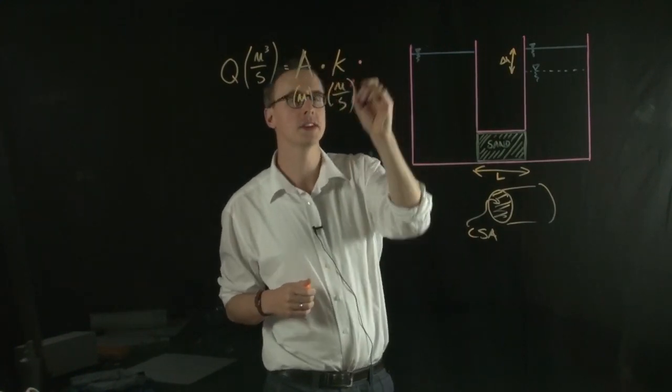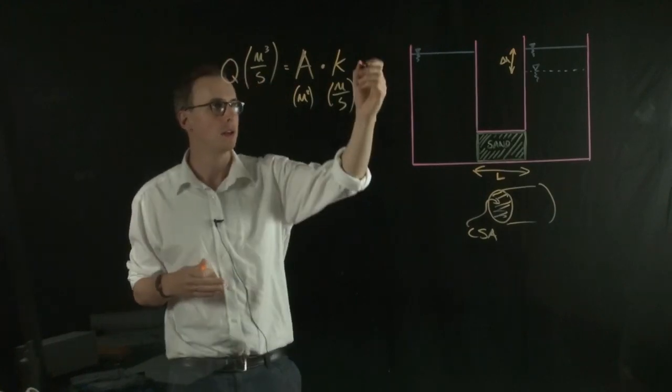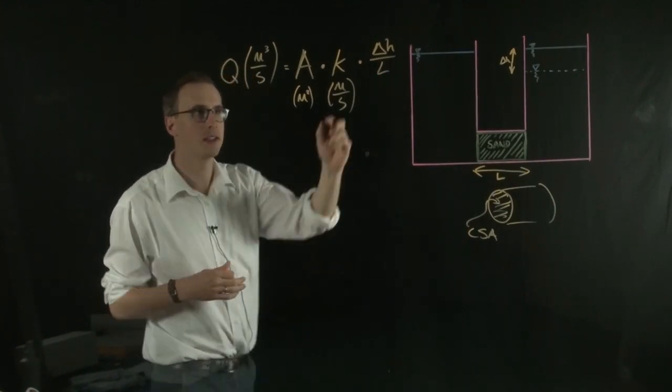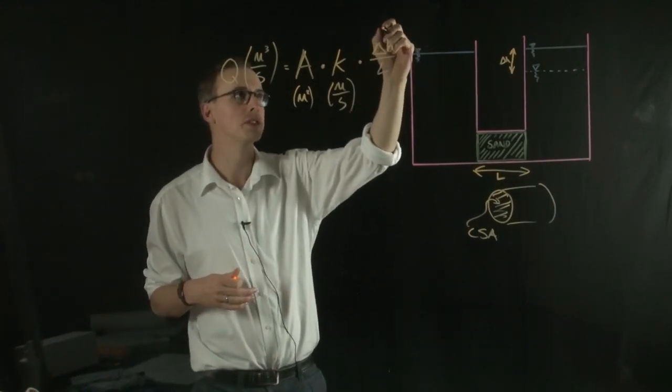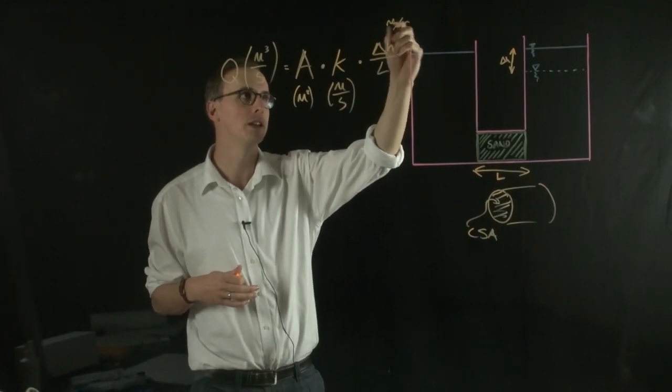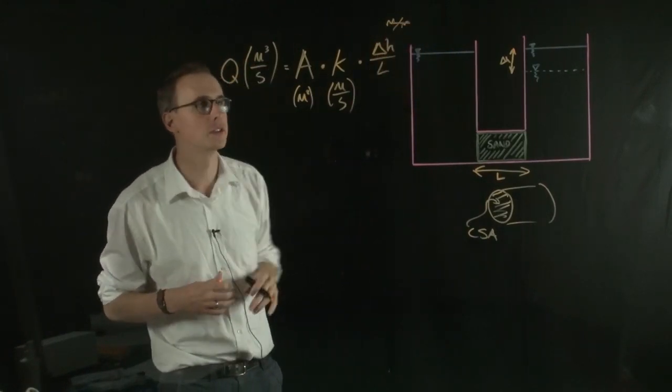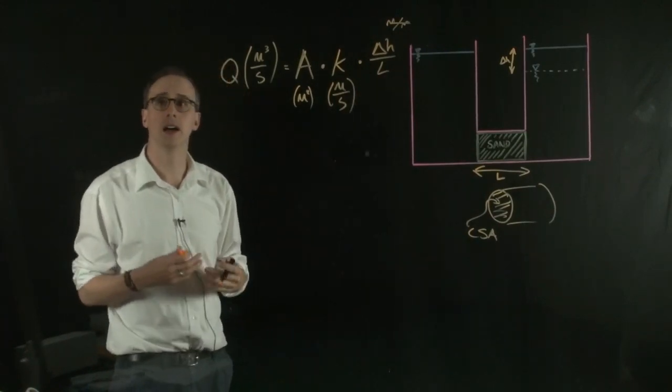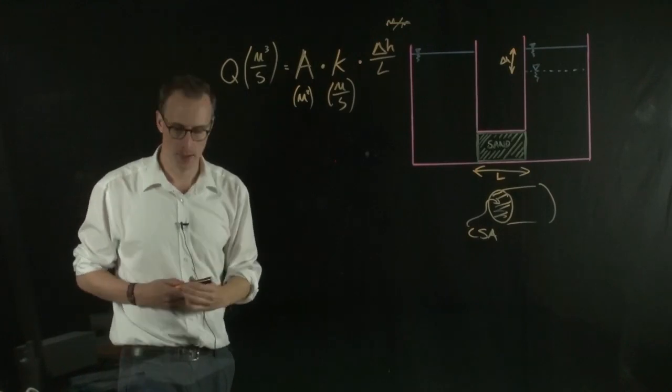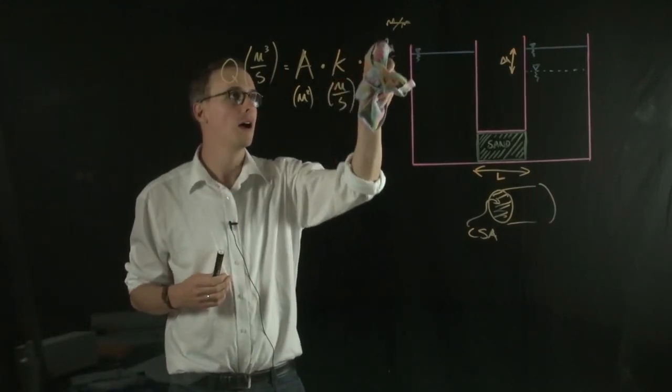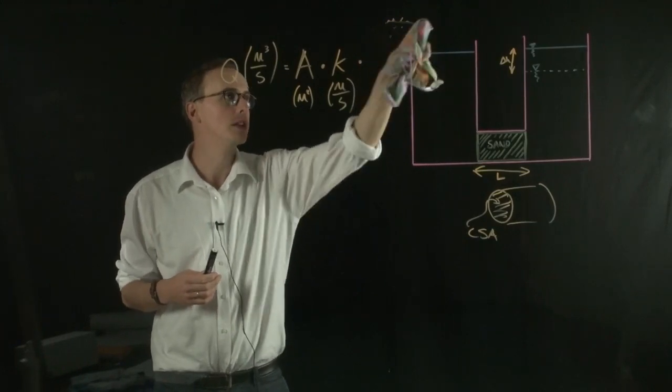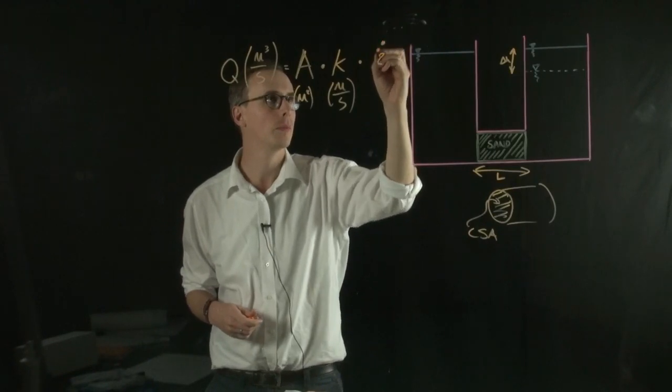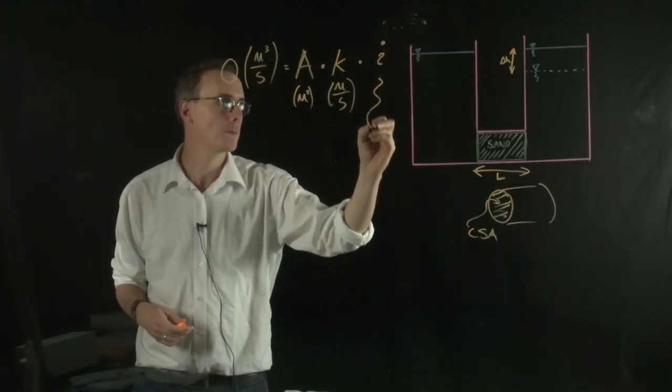So what's missing from this is the driving force, which is delta H over the flow path. And you can see that actually delta H and L are both in the same units, so ones in meters over meters, and they cancel each other out. So the units don't contribute to the units of flow here. So we have the driving force now, and that's called the hydraulic gradient. And it's often written as, instead of delta H over L, it's written as i, the hydraulic gradient.